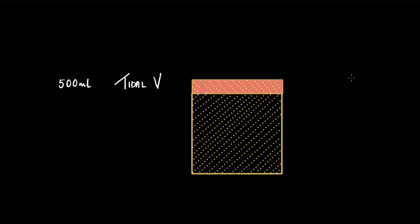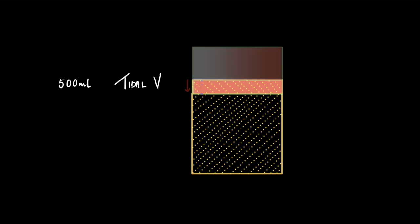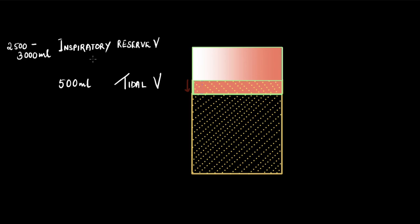Suddenly Ravi decides to take a deep breath. Apart from the normal amount of air he was inhaling, he will take in an extra amount of air. This extra amount of air, taken in above the normal tidal volume, is called inspiratory reserve volume (IRV), and it is around 2,500 to 3,000 ml — which is huge!